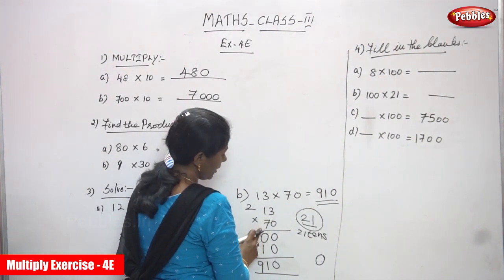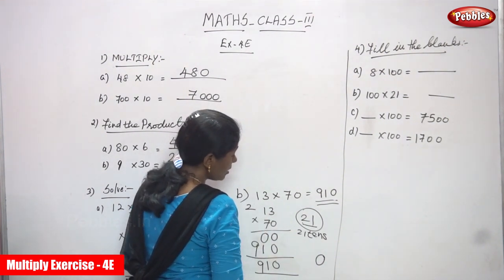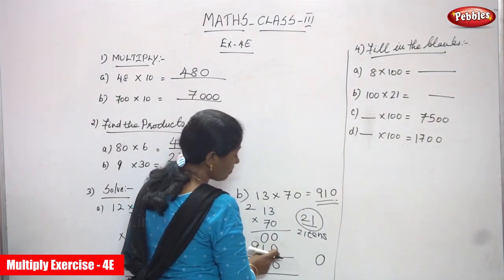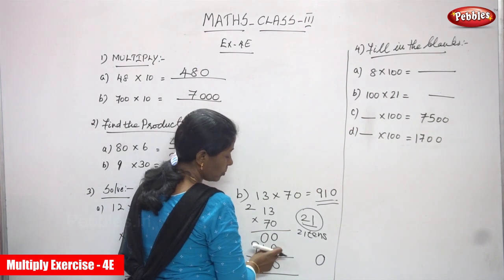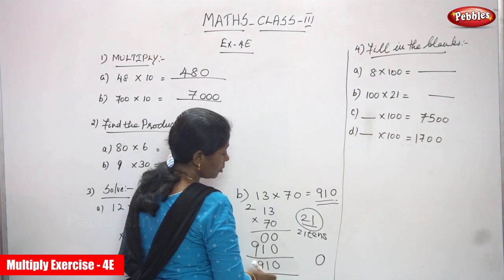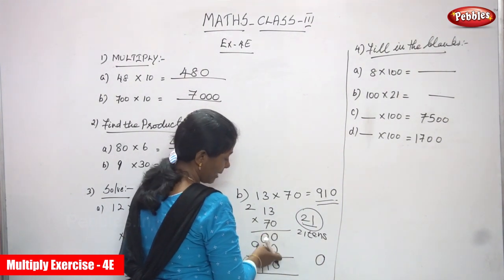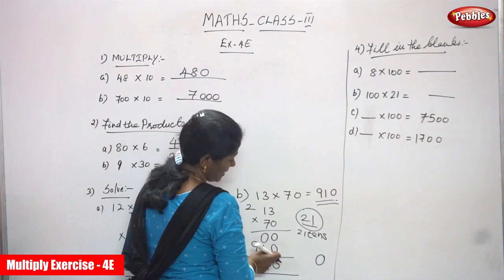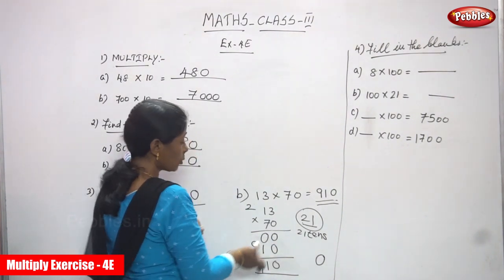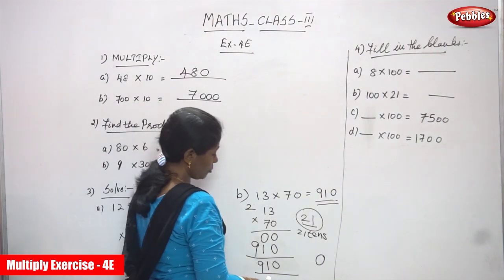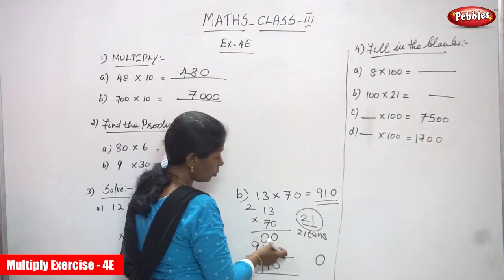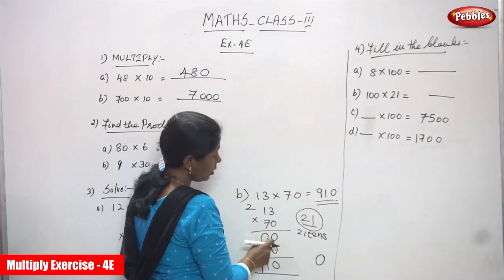Now multiply by 7 tens. In the ones place write 0, because you are not going to write in the ones place. You must put zero in the ones place — otherwise, if you skip it, you will get confused. That is the only reason I've written zero in the ones place.